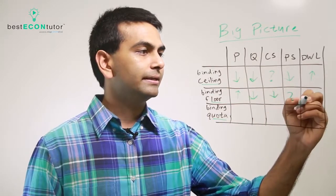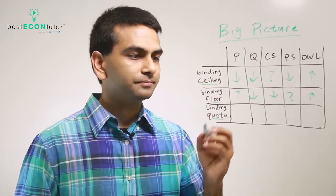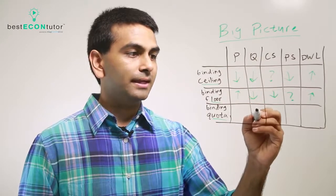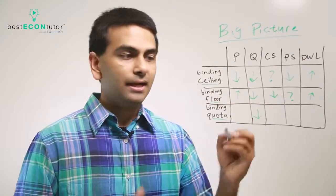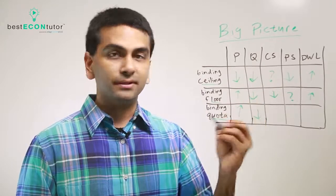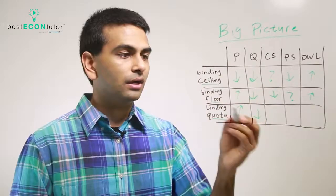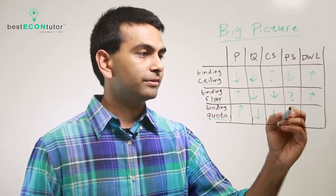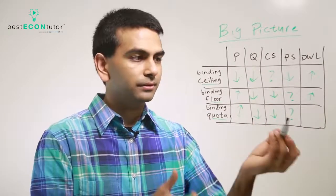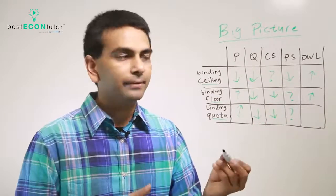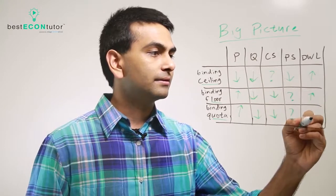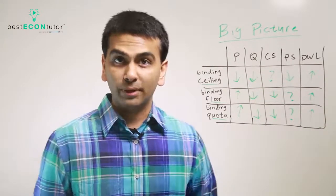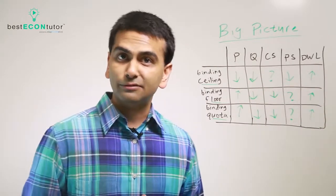The quota, as we saw, definitely lowered the quantity and raised the price up to what consumers would pay. Consumer surplus went down, and producer surplus — depending on whether you're the quota holder — could go up or down. This also caused deadweight loss. So this is the big picture for what happens when the government intervenes in a market.